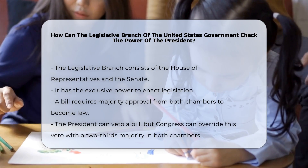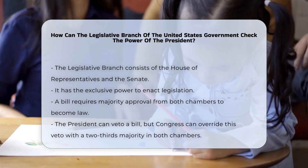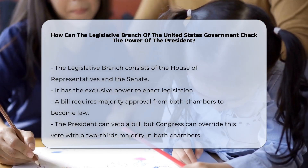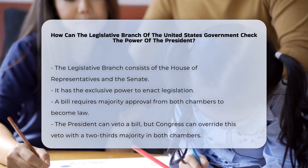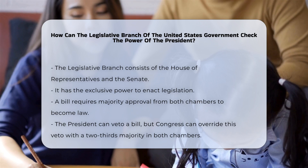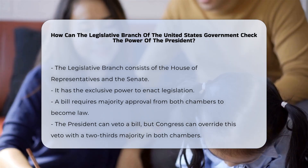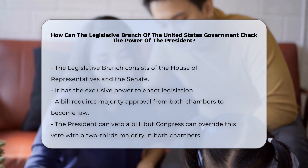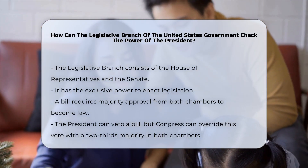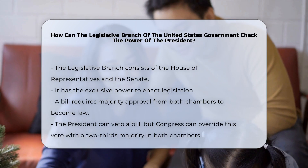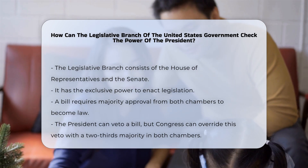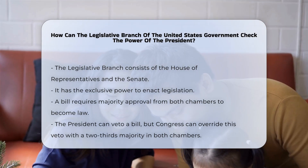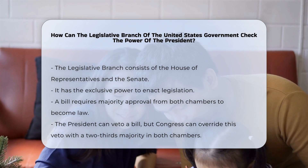Legislative powers. The legislative branch has the sole authority to enact legislation. For a bill to become a law, it must pass both the House and the Senate with a majority vote. If the president vetoes a bill, Congress can override the veto with a two-thirds majority vote in both chambers.